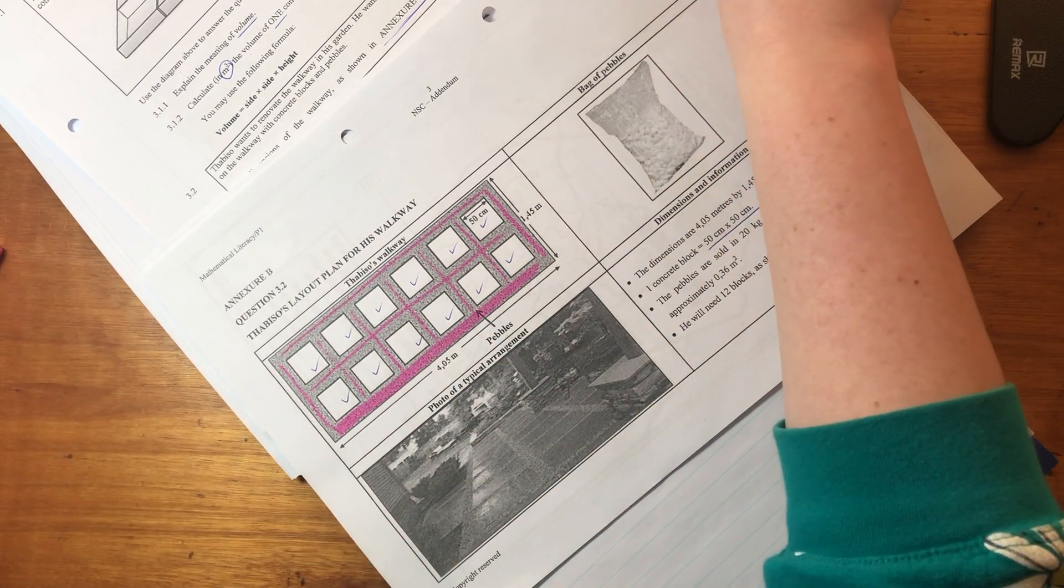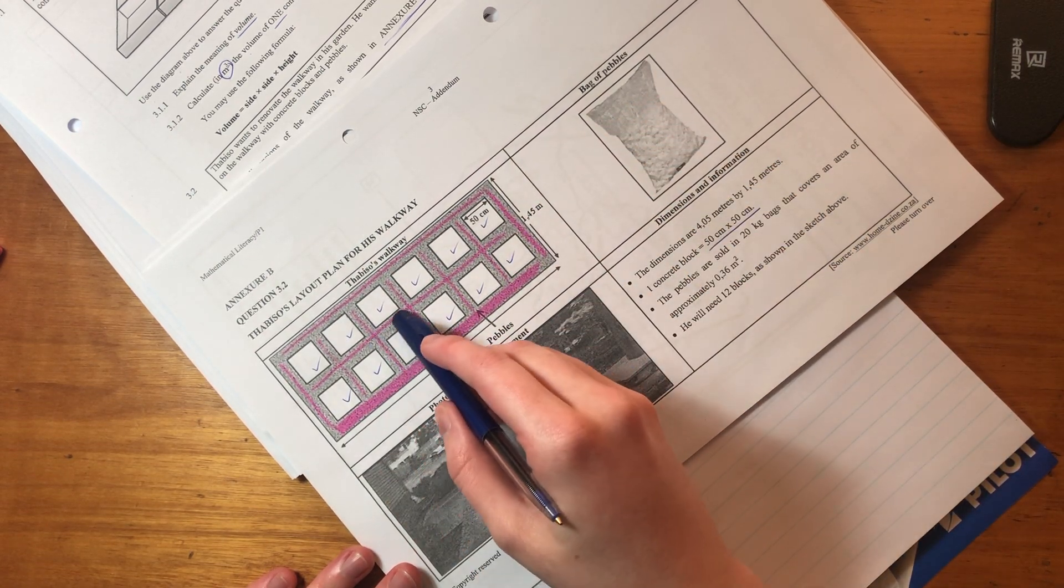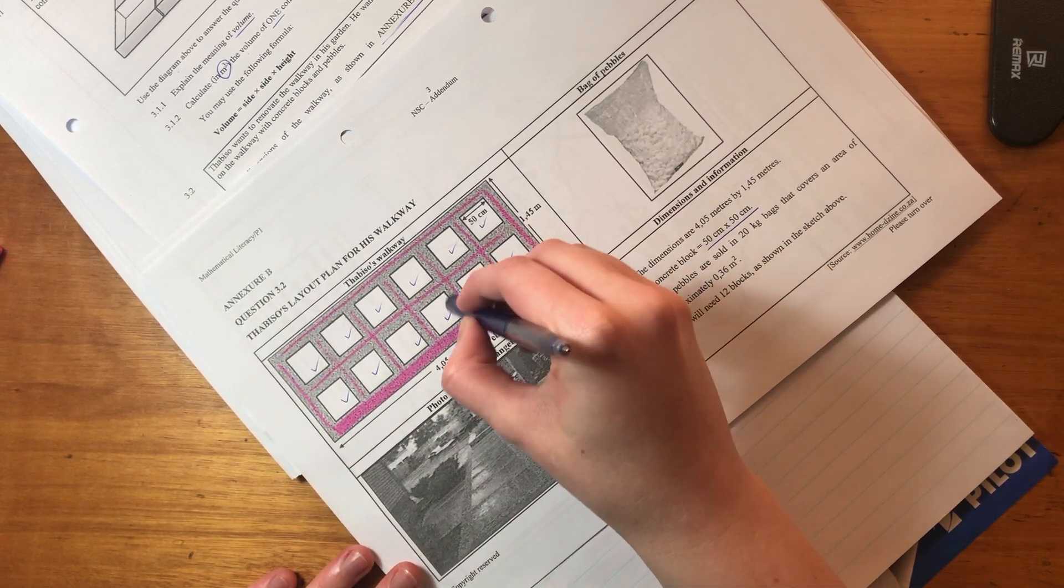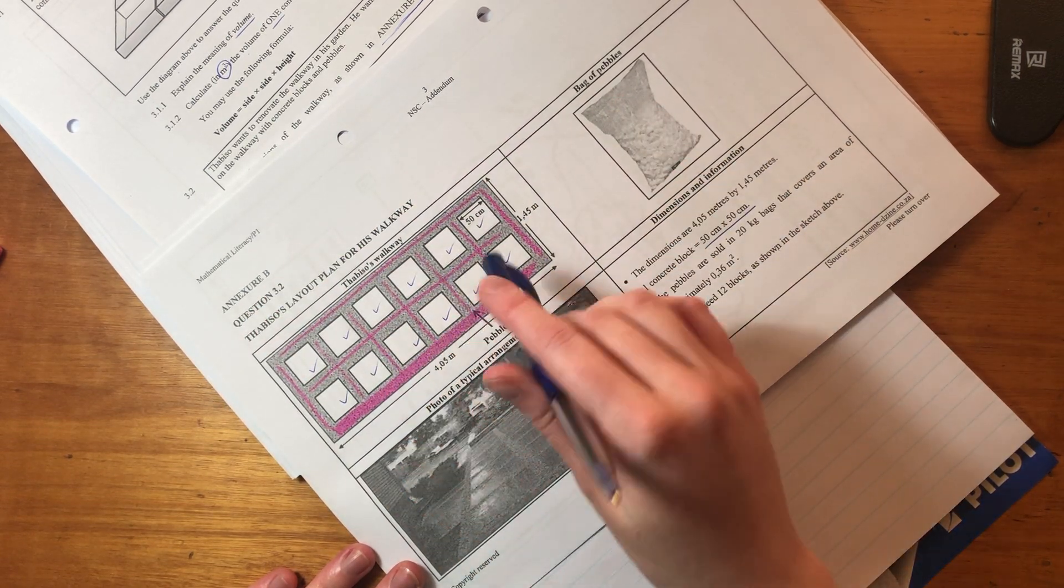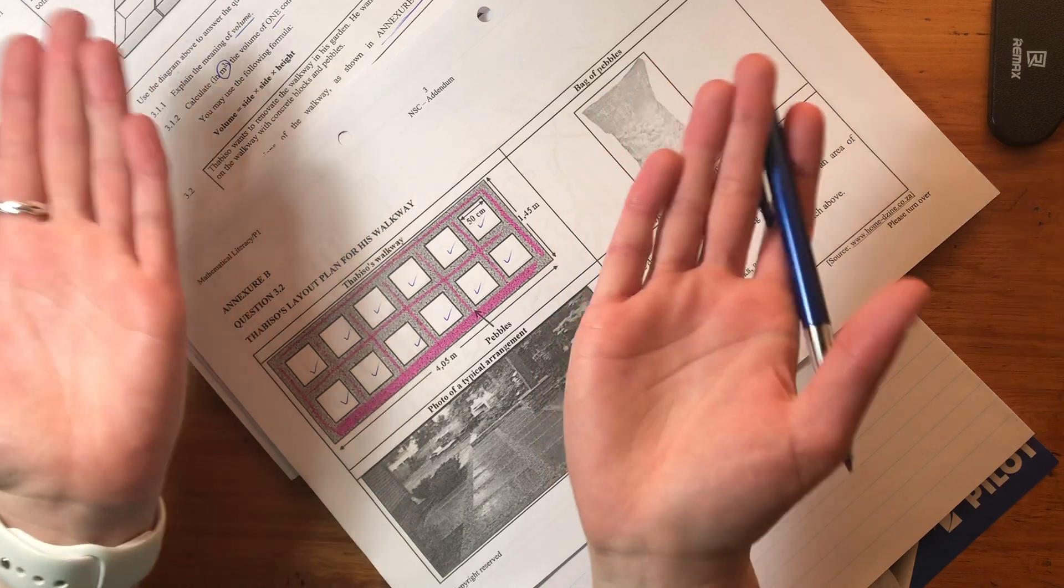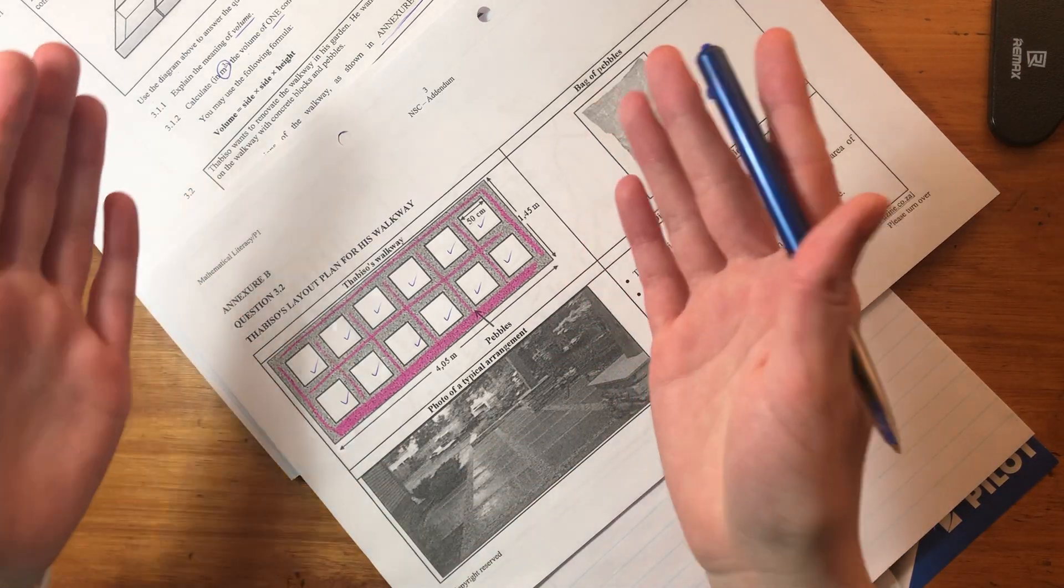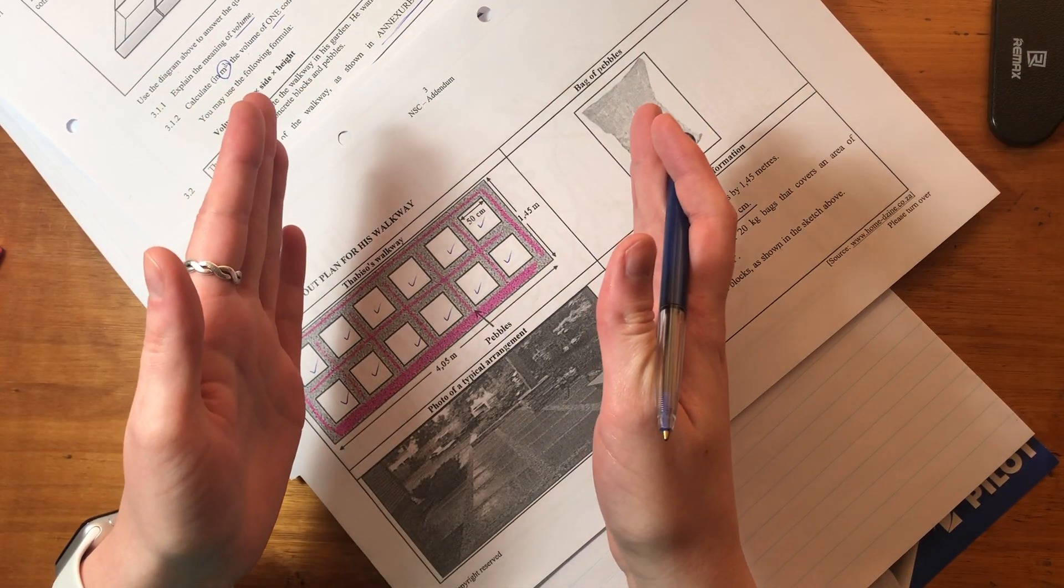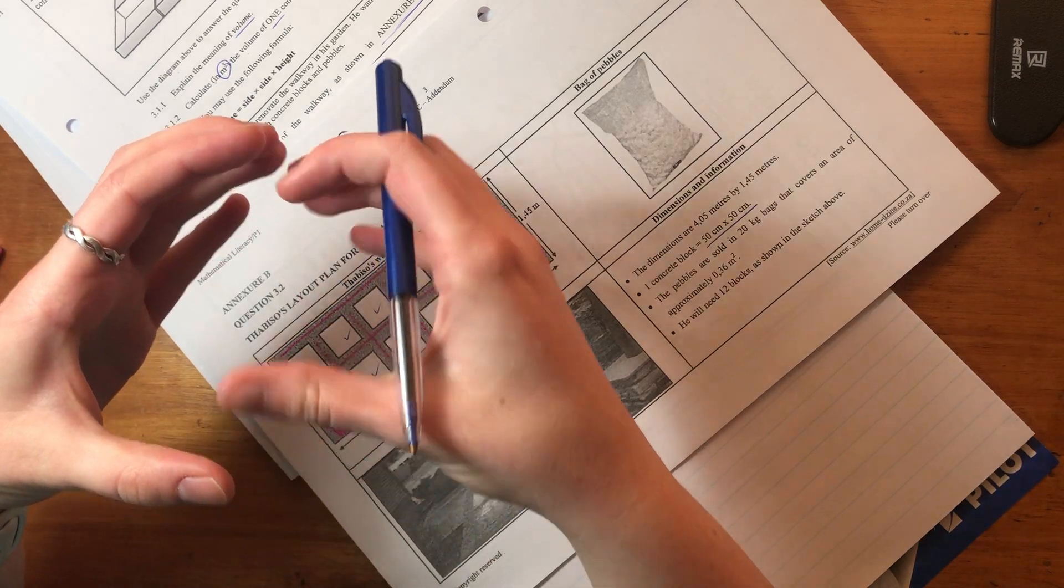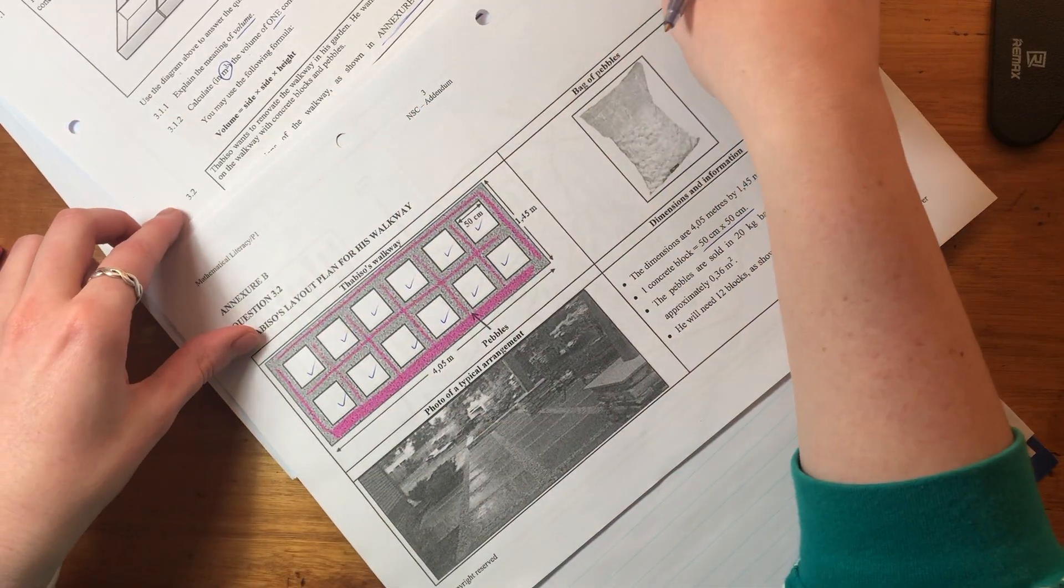Now we can either make this really simple for ourselves, or we can make it really complicated. What I'm going to do, and this is quite important, is I'm going to work out the area of the total walkway. So I'm not going to look at these individual little gray areas. I'm going to work out the area of this whole block, and then I'm going to subtract the area of the concrete blocks. Because if we have the area of the whole block minus the area of the concrete blocks, then you have the area of the gray. It's important to think about area sometimes like this. You don't always just calculate it using length times breadth. If there's two parts of something, if I work out the area of the whole and remove one part, then I'm left with the area of the other part.